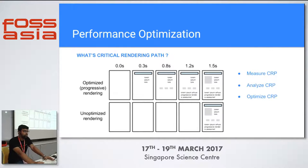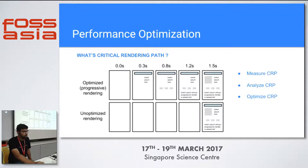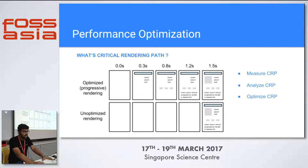When we talk about performance optimization, we have to understand what the critical rendering path is, because this is the most important thing. Optimizing the critical rendering path makes your websites smoother and faster. First, you should check if you really need performance optimization, and for that you have to measure the CRP — the critical rendering path.